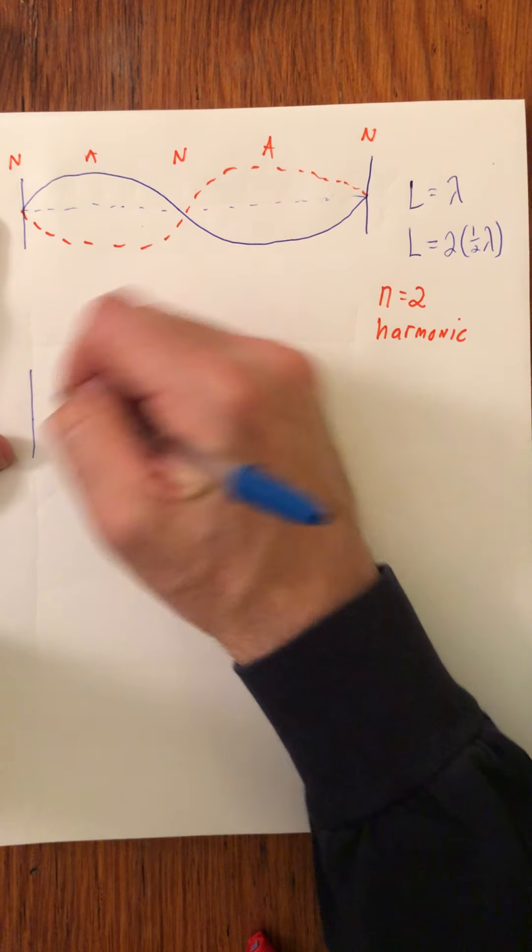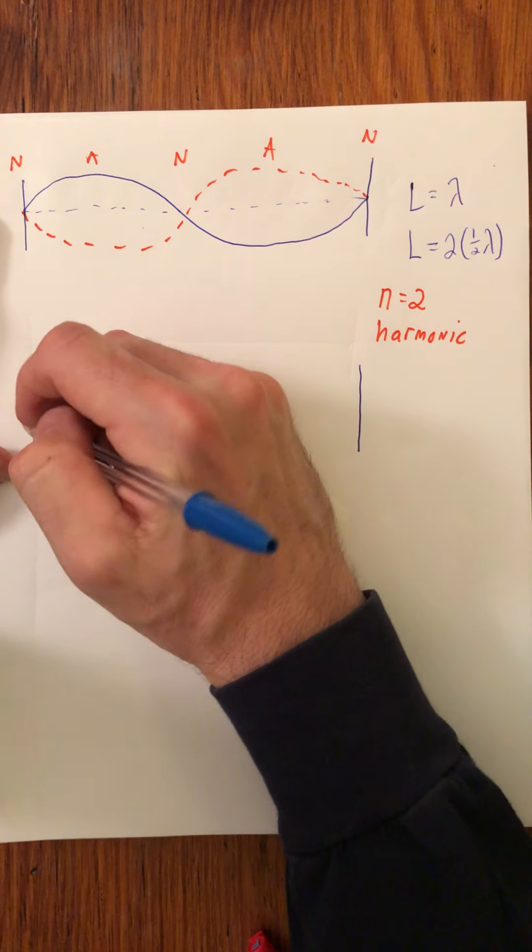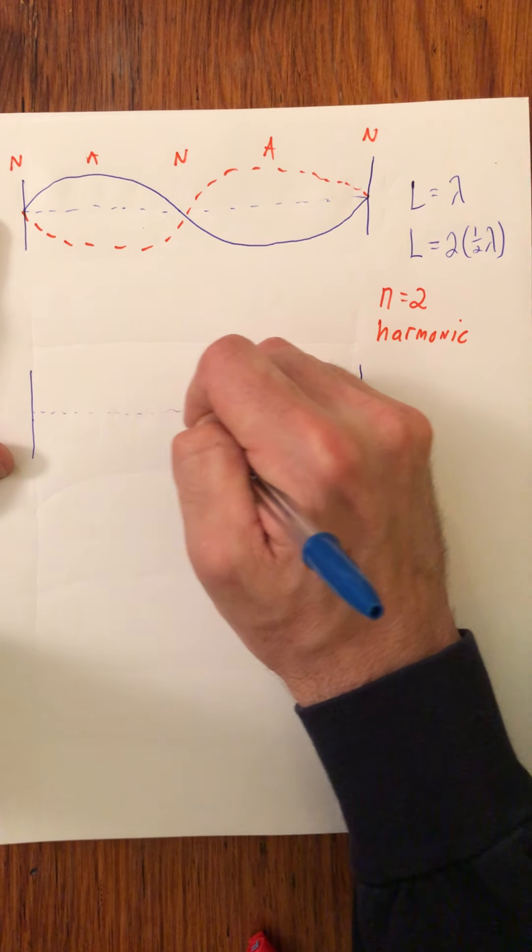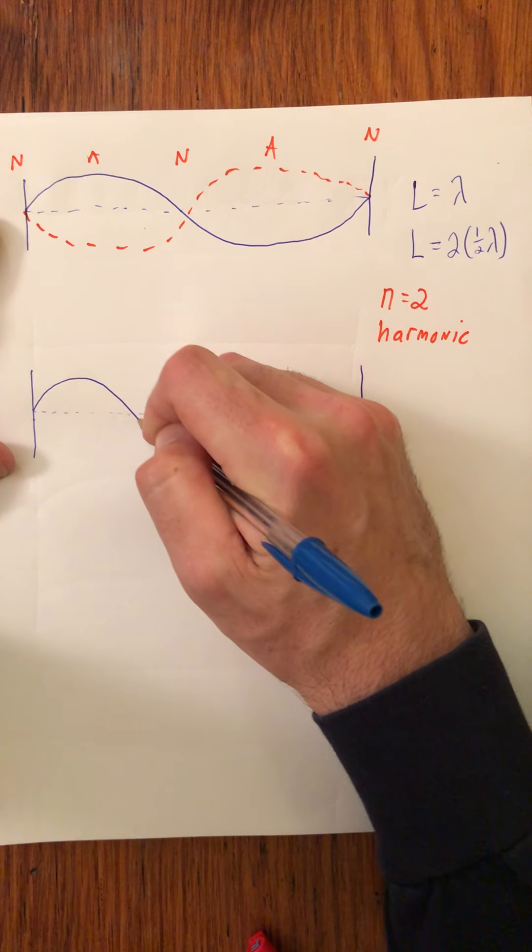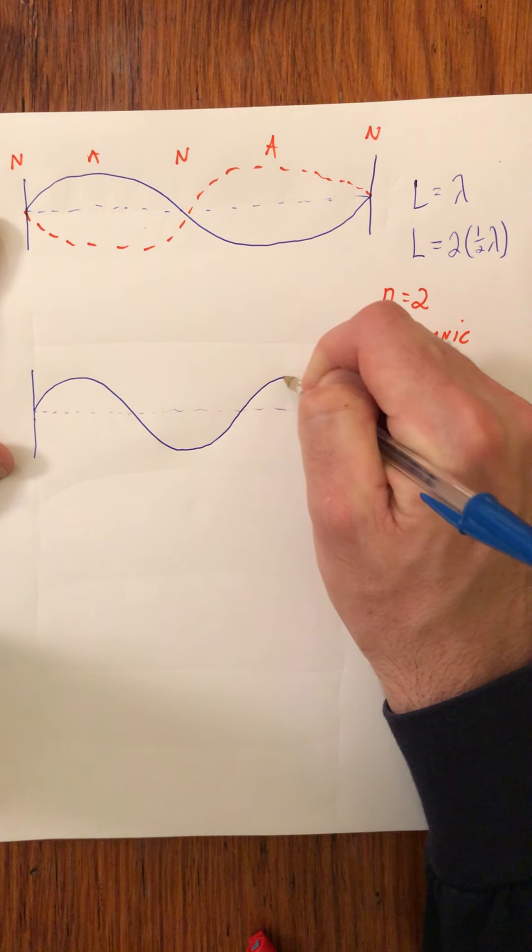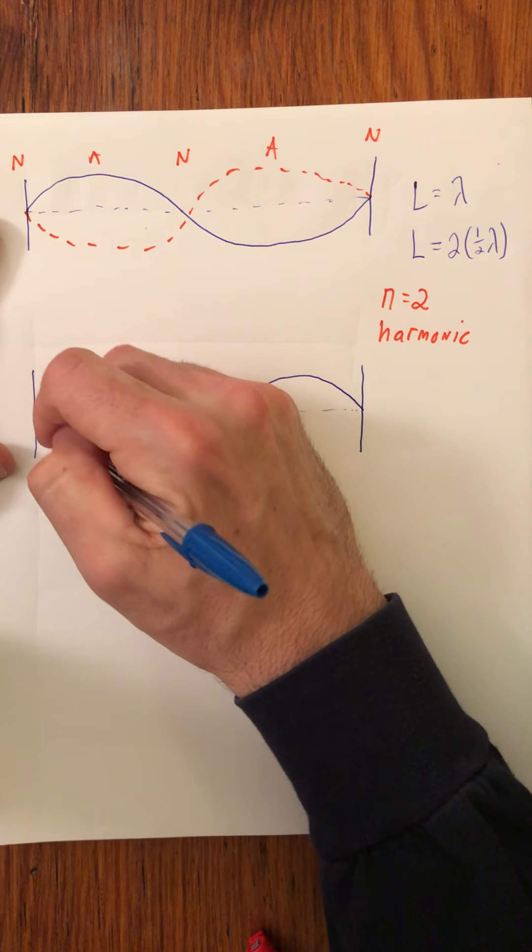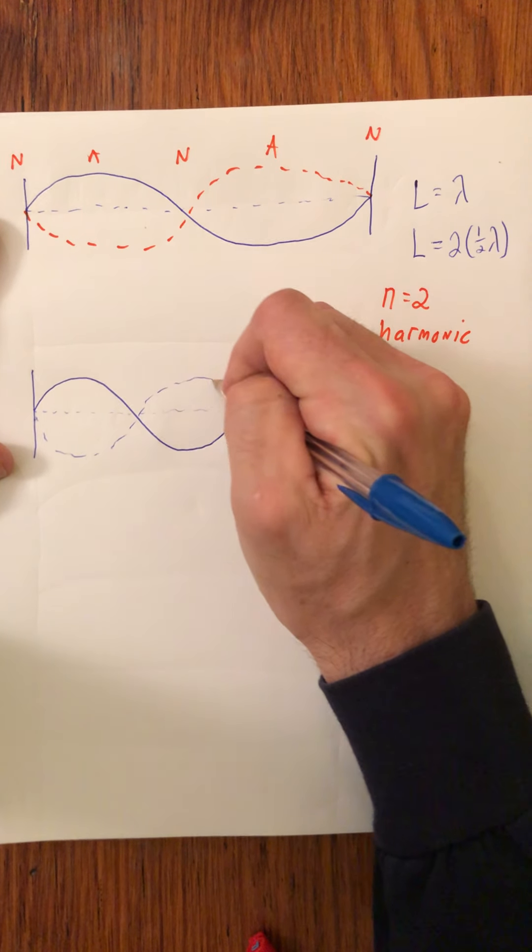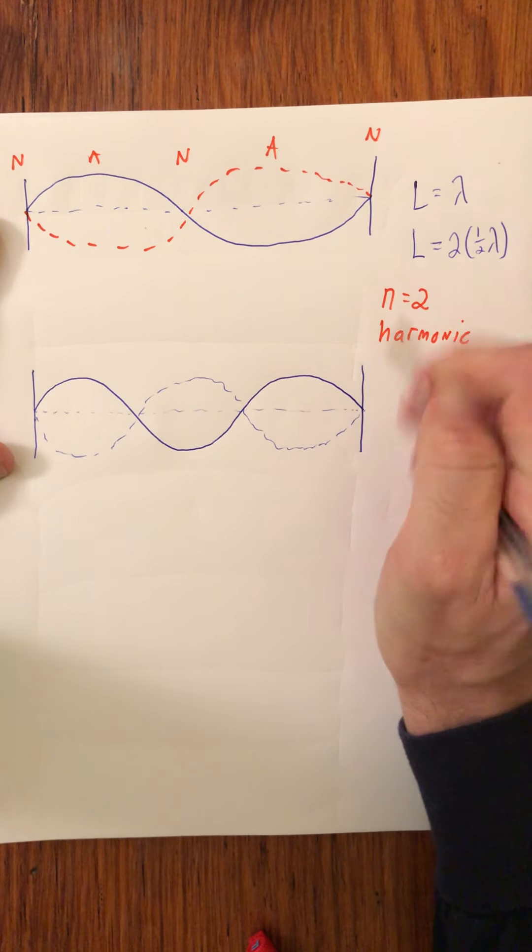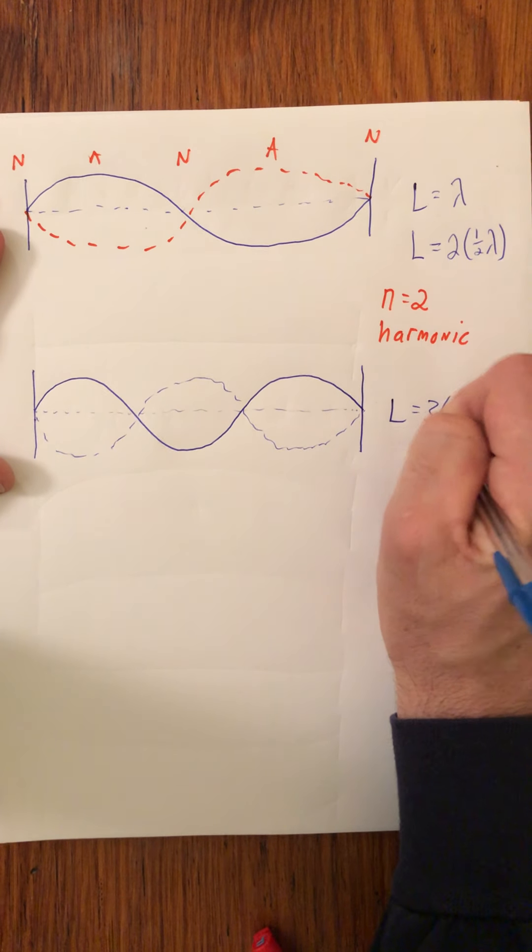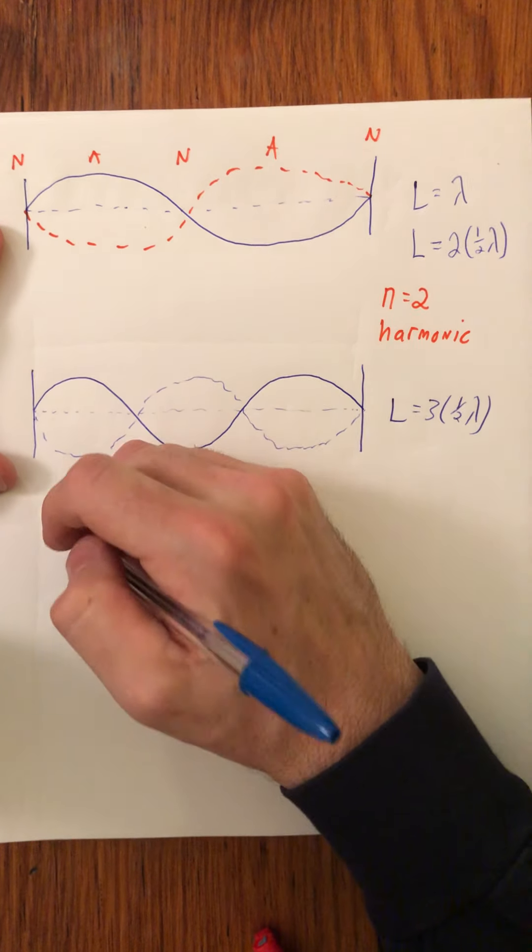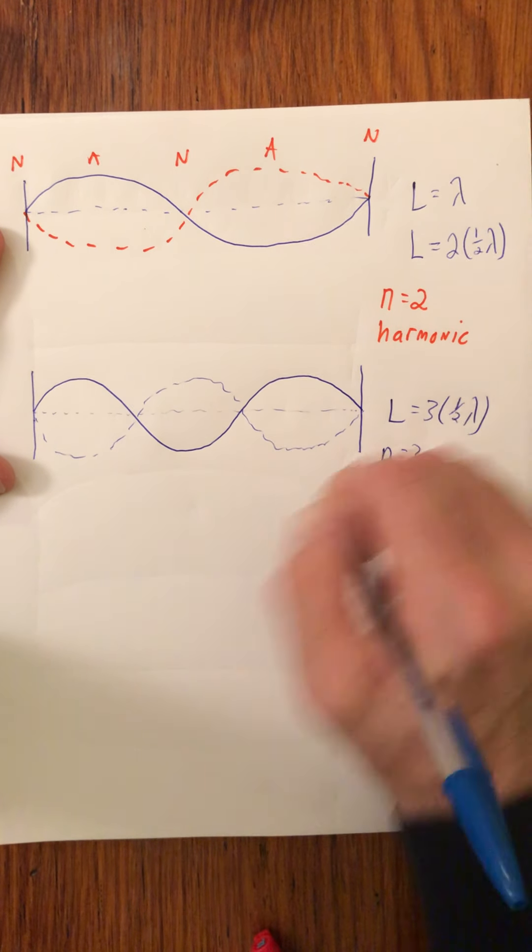Alright, so then let's keep going up the harmonics, and we'll draw a couple more. So I'm going to draw the equilibrium line as a dotted line. And now what we're going to do is we're going to have the n equals three. There we go. Draw where the wave is half a cycle later. So notice here, L is equal to three half wavelengths. And this is going to be the n equals three.